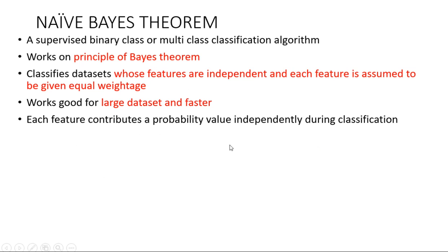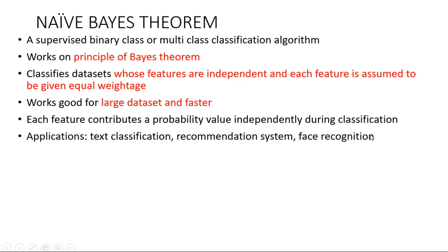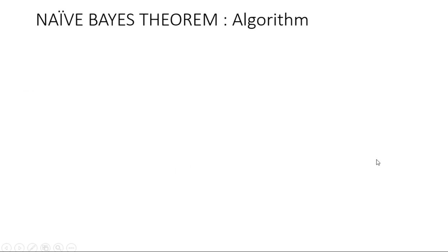Each feature, since this is a Bayes theorem based upon the probability concept, will contribute a probability value independently during the classification. It has many applications — you can use Naive Bayes for text classification, recommendation systems, face recognition, and many more.